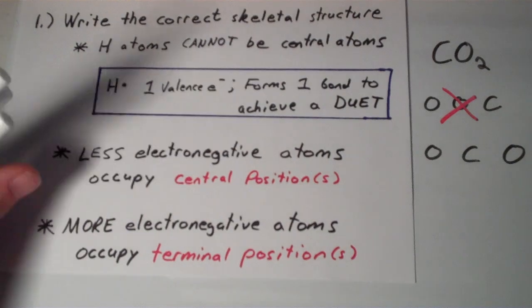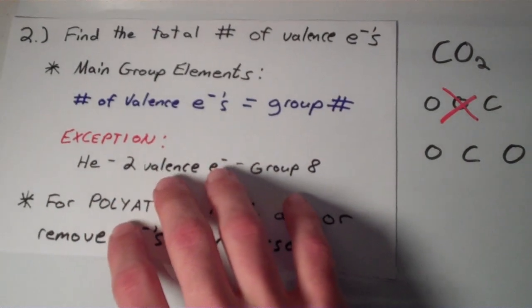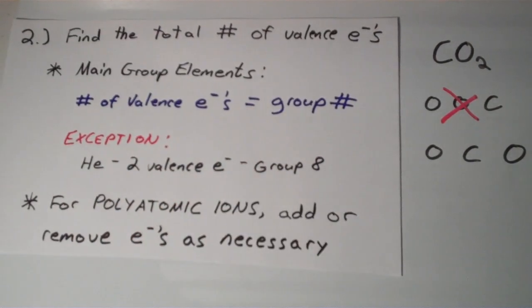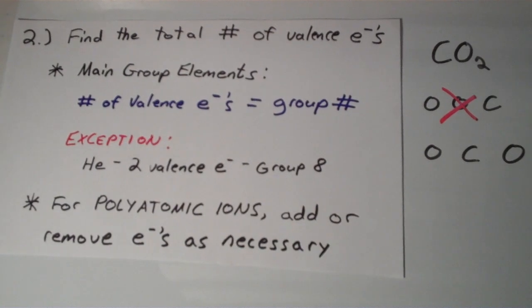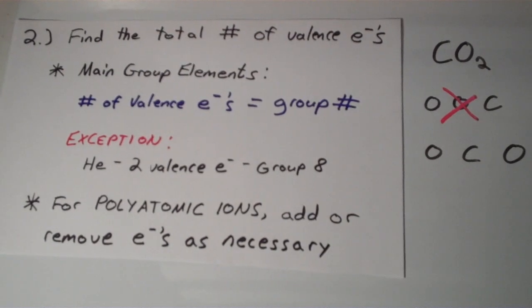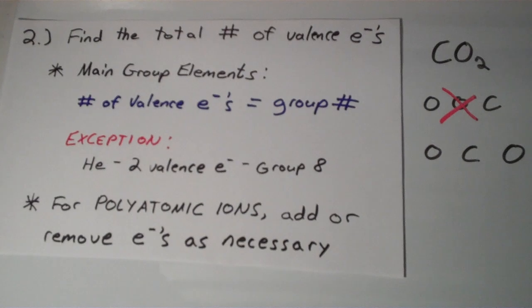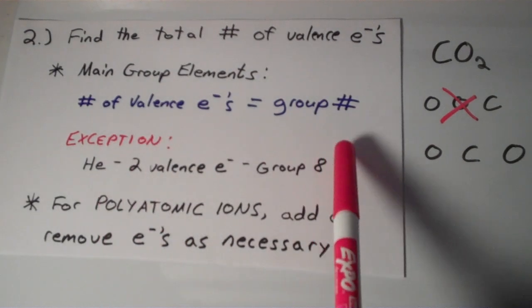So the next step is to find the total number of valence electrons in this molecule. And the way that we do that is, a good tip would be for the main group elements, which, what are the main group elements? I'm just talking about everything except for the transition metals and the intertransition metals. So the alkali metals, the alkaline earth metals, and then all the groups from boron to the noble gases. For those main group elements, the number of valence electrons is going to be equal to that group number.